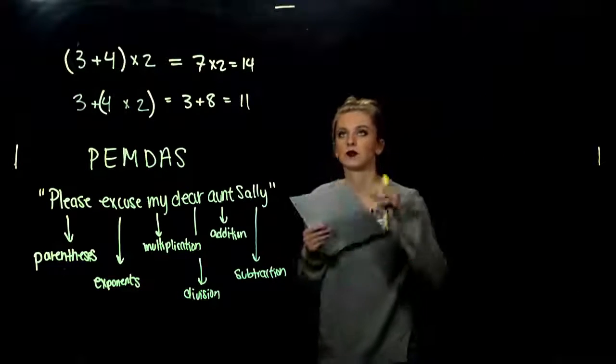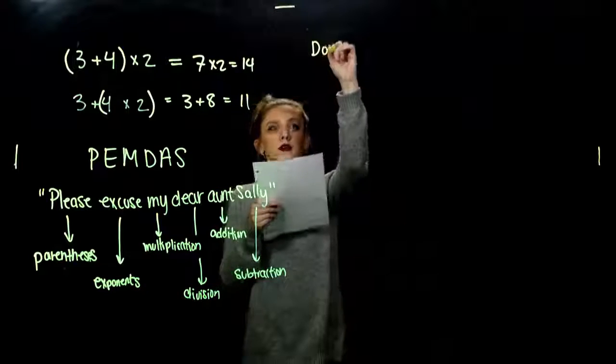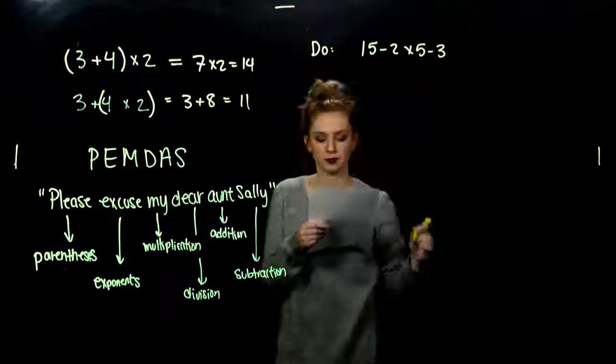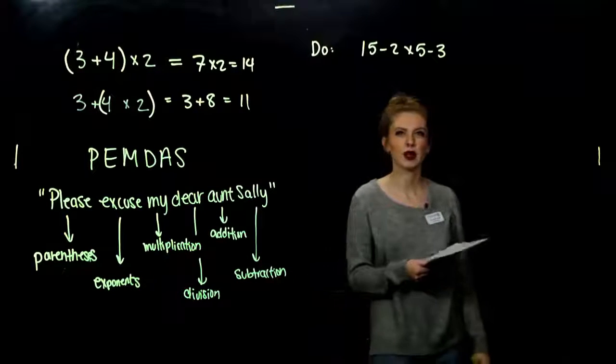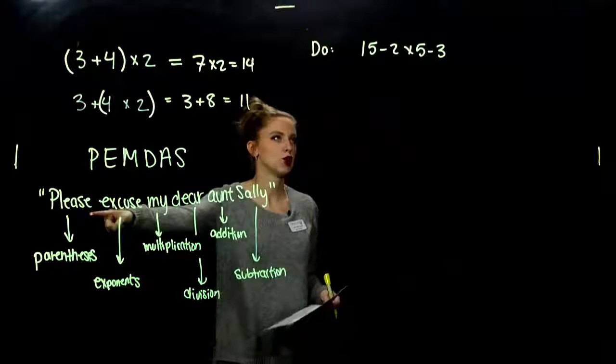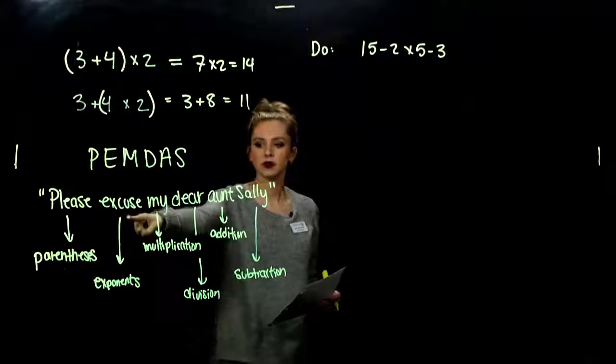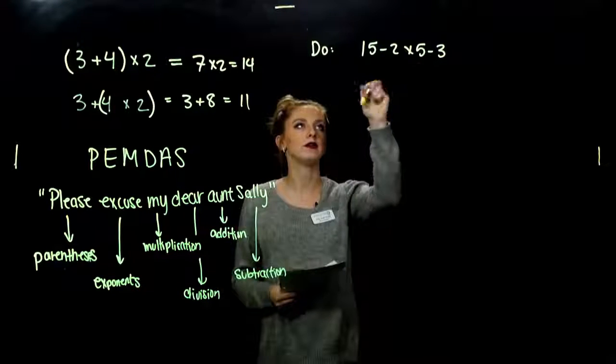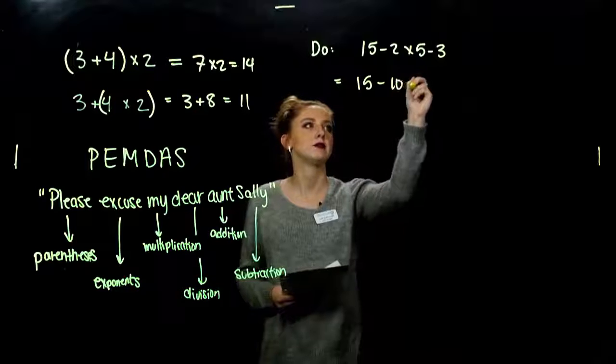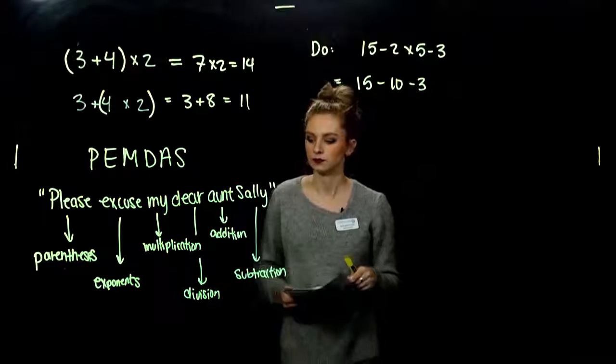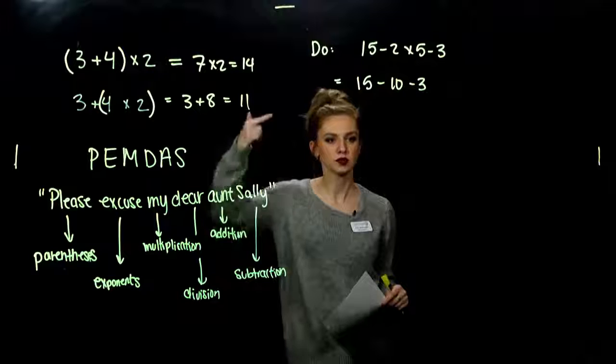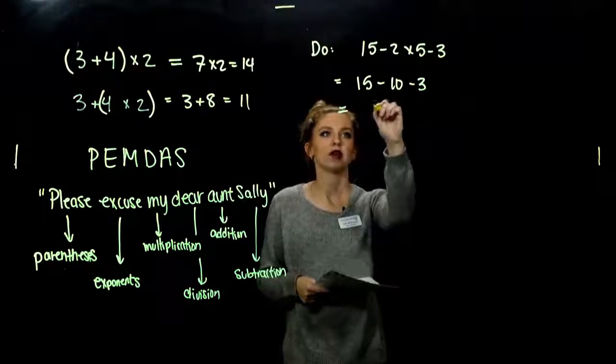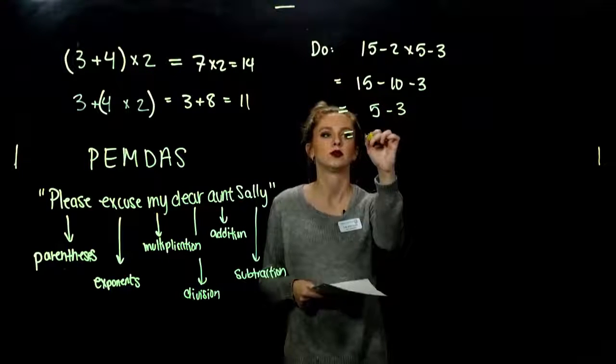So, what order do we have to go in to calculate? 15 minus 2 times 5 minus 3. So, what has to happen first? Do we have any parentheses? Nope. Don't have to worry about that. No exponents. So, multiplication and division. That has to happen first. So, 2 times 5. We're looking at 15 minus 10 minus 3. Took care of those. Now we just have addition and subtraction. So, we just go left to right. So, 15 minus 10 will give me 5. Minus another 3. 2. Order does matter.